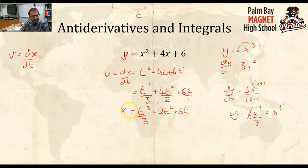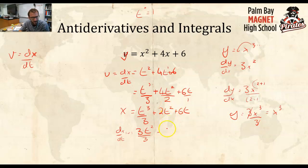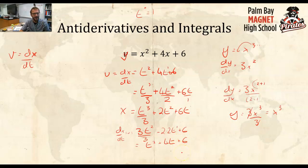Now this is not quite done. Let's take the derivative of this to make sure we get back to our original function. Taking dx/dt: the 3 goes out front giving 3t squared over 3, plus the 2 comes down giving 2 times 2t, plus 6. Tidying up: 3 over 3 cancels to give t squared, 2 times 2 is 4t, plus 6. We get back to our original velocity function. So I took the anti-derivative, then took the derivative, and got back to where I started.